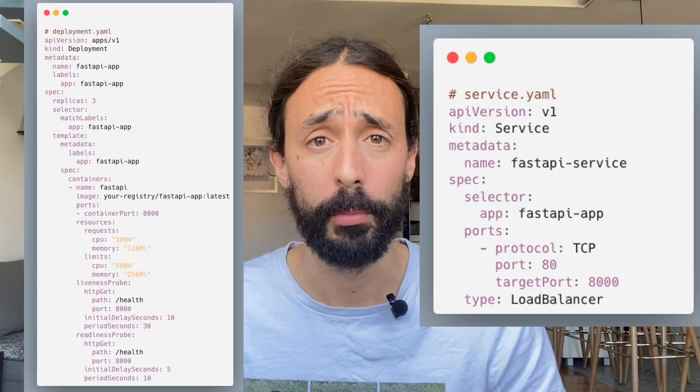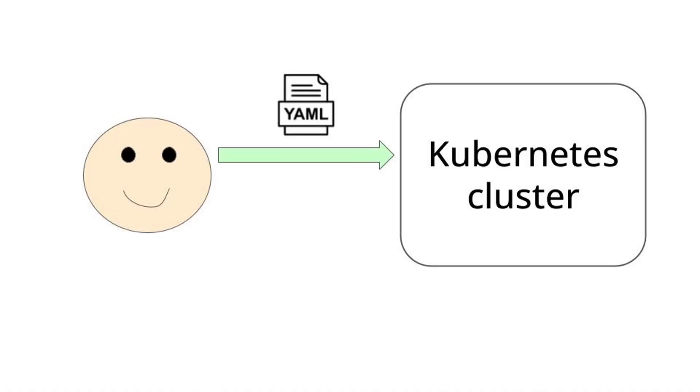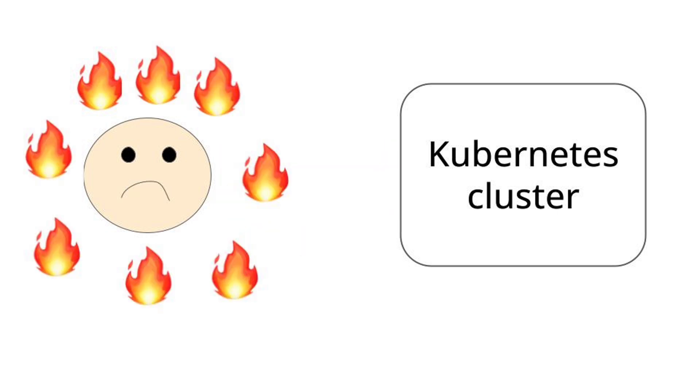But Kubernetes has a problem: the YAML configuration file you need to write to deploy even the simplest app is typically long, very verbose, and error-prone. This takes a lot of time for very simple deployments — also known as the Kubernetes YAML hell. So the question is: can you deploy to a powerful Kubernetes cluster without going through Kubernetes YAML hell?